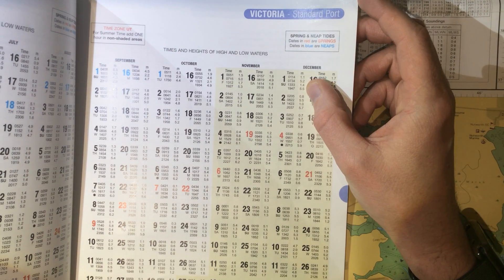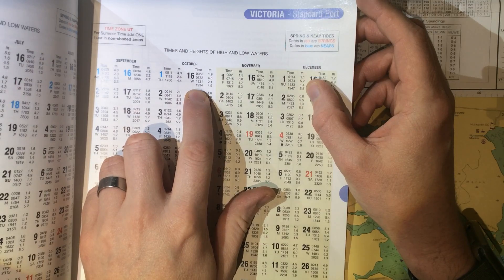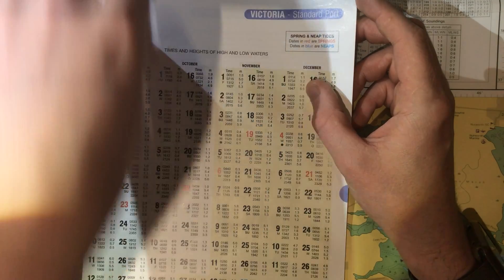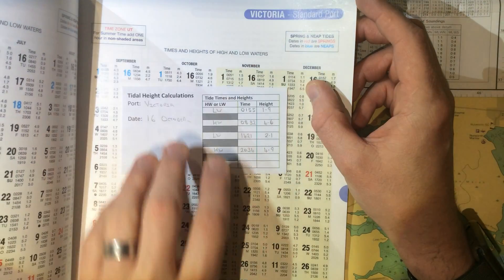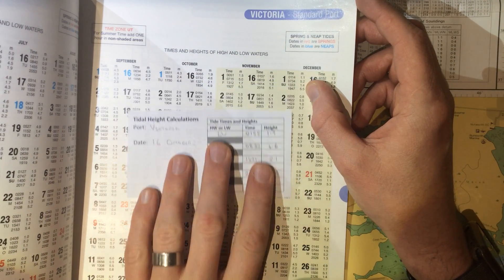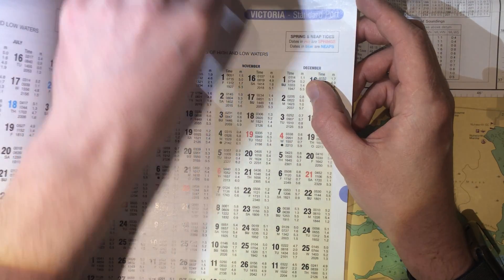In this example we're interested in finding the height of tide at a particular time on the 16th of October. So that we're not referring back and losing track of where we are all the time, it's normally best to write down the tide times and heights on a separate sheet of paper, as I've done here, that you can carry with you throughout your calculations.